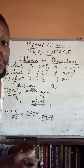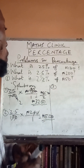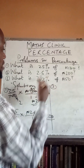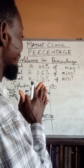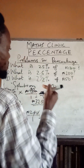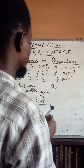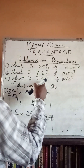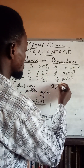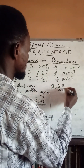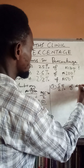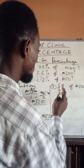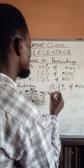Number three: what is two and a half percent of 50 naira? Two and a half is carrying the percent sign, which means two and a half over 100. We convert this to an improper fraction: 2 times 2 gives 4, plus 1 gives 5, so that's 5 over 2 percent of 50 naira.